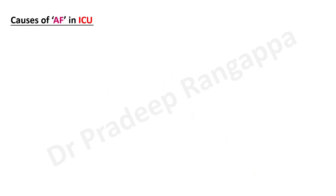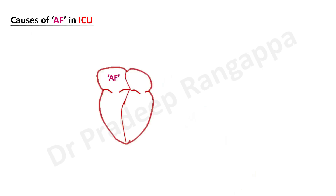Acute AF in ICU is not uncommon - any patient who is sick in ICU is at risk of developing AF, the commonest arrhythmia in ICU. The simplistic way of looking at causes is cardiac-specific and non-cardiac-specific. Cardiac causes include previous history of AF, MI, ischemic heart disease, or acute coronary syndrome - all placing patients at higher risk of developing AF.